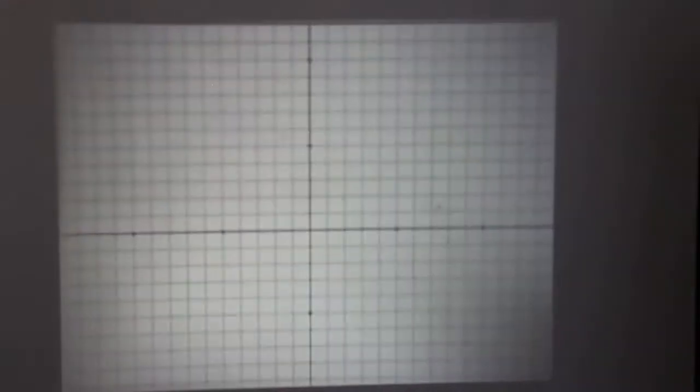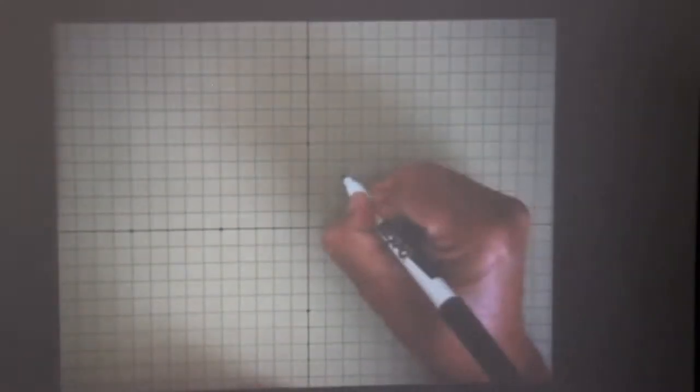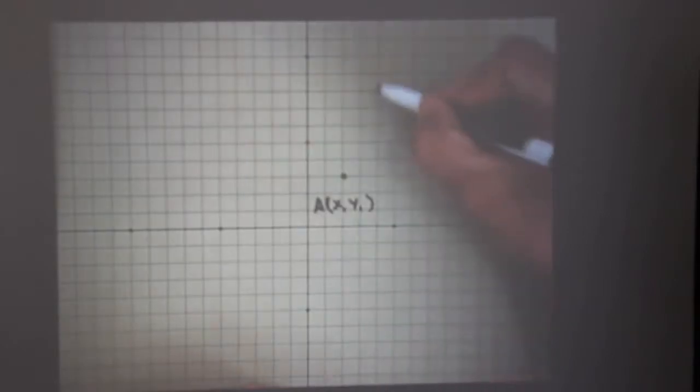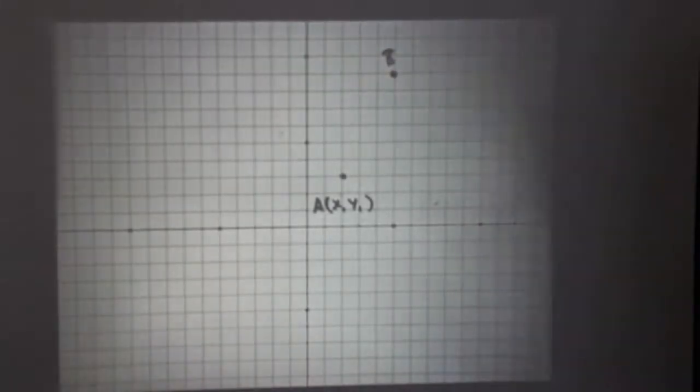When we have two points in space, let's say we have this value right here. We'll call this point A. It's our x1, y1. And then we pick another point right there. We'll call this point B. This is our x2, y2.